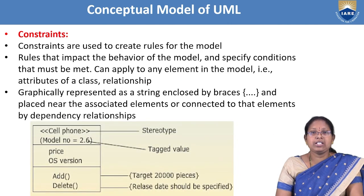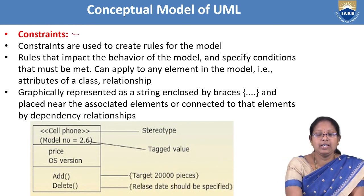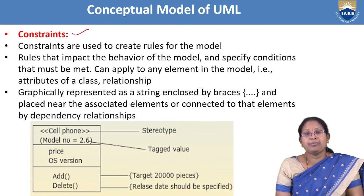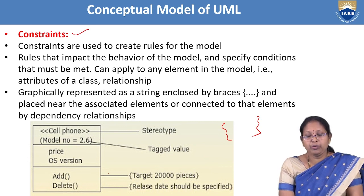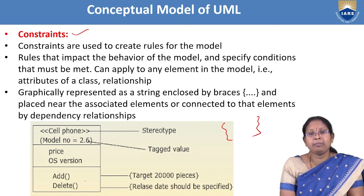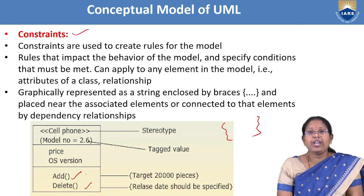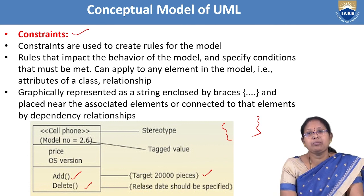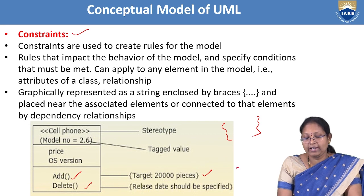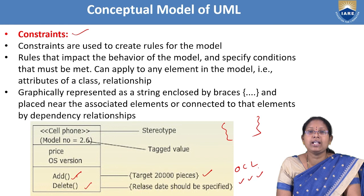Constraints extend the concepts and syntax of the system and are represented using flower brackets. We put a constraint on a particular element — for example, limiting an operation to adding only 20,000 copies. Constraints are written using OCL, the Object Constraint Language.